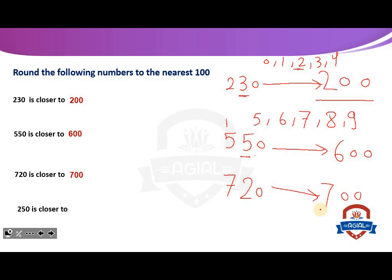Another example: 250. We put 0 as it is and look at the tens digit, which is 5. That is rule number 2 — tens digit 5–9 — so we increase the hundreds by 1. Therefore, 250 rounds up to 300.